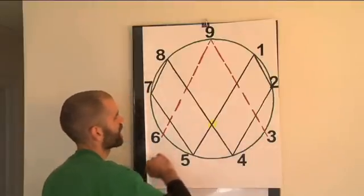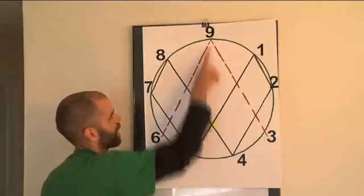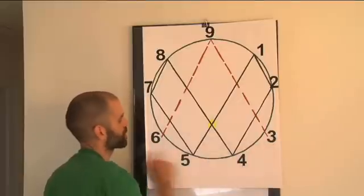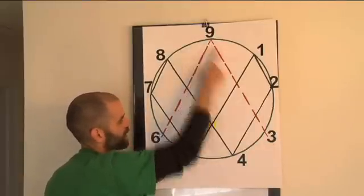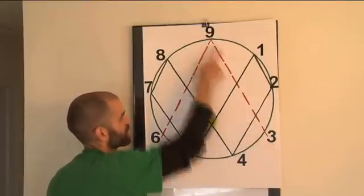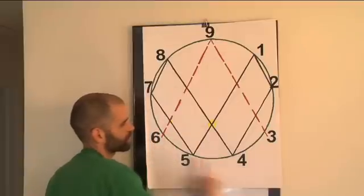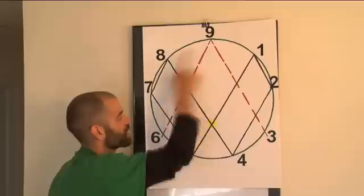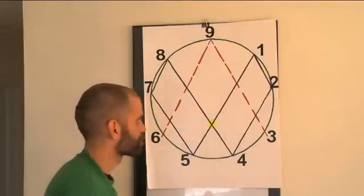Then 3, 9, 6 is the same. If I go 9 plus 3 is 3, 3 plus 3 is 6, 6 plus 3 is 9, so on and so forth. You can do backwards. 3 plus 6 is 9, 9 plus 6 is 6, 6 plus 6 is 12, which is 3. They're related in the same way.